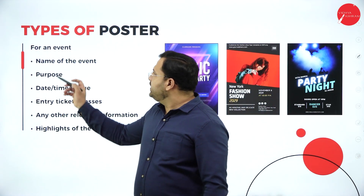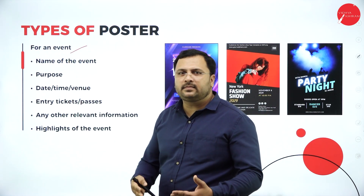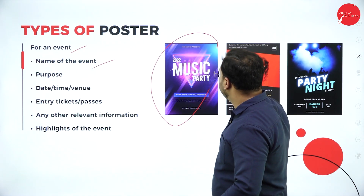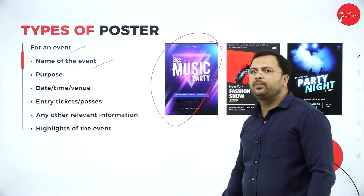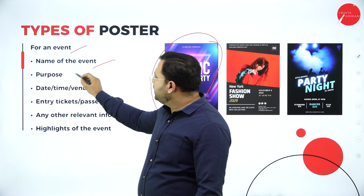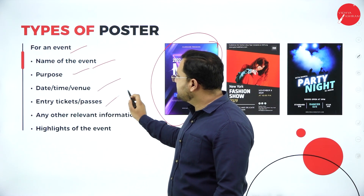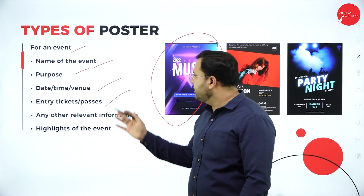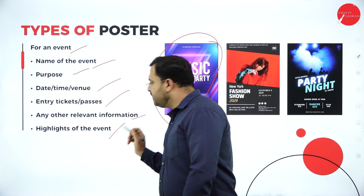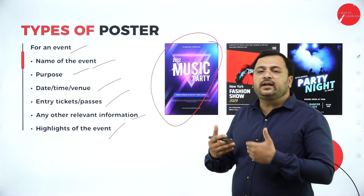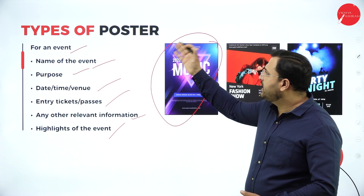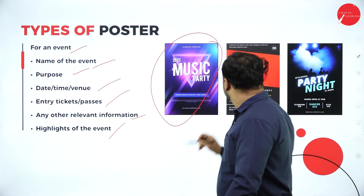After the awareness poster, you can use a poster for an event — those become event posters. For example, you mention the name of the event, such as '2022 Music Party.' It talks about the purpose, day, time, venue, entry tickets or passes if any, any other relevant information, and the highlights of the event. So based on the intention of the poster, we divide them into two groups: social awareness posters and event posters.